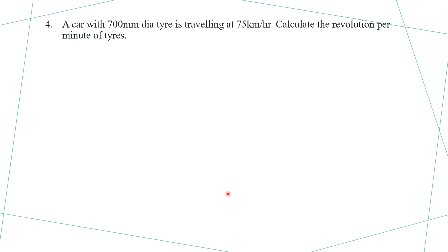Example number 4: a car with a 700 millimeter tire is traveling at 75 kilometers per hour. Calculate the revolutions per minute of the tires. The speed is 75 kilometers per hour and we need to calculate the revolutions per minute.